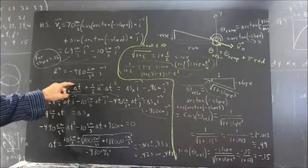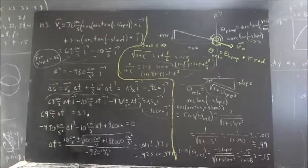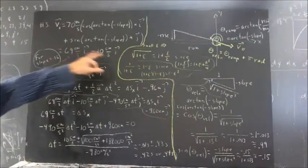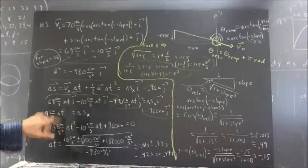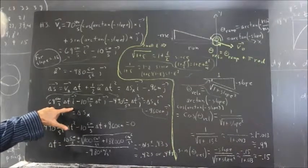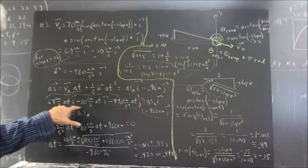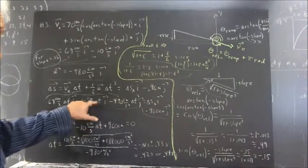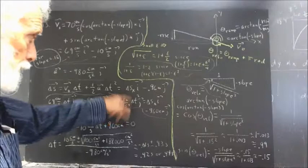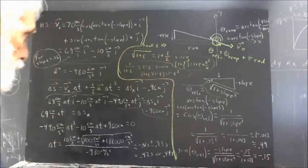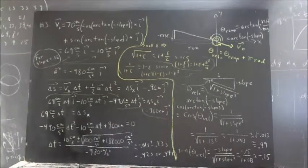Okay, substituting for V naught delta T, V naught again 69 centimeters per second I minus 10 centimeters per second J. All multiplied by delta T gives us the 69 centimeters per second delta T I minus the 10 centimeter per second delta T J. And then minus the 0.96 centimeters per second squared delta T squared. And that's equal to what?